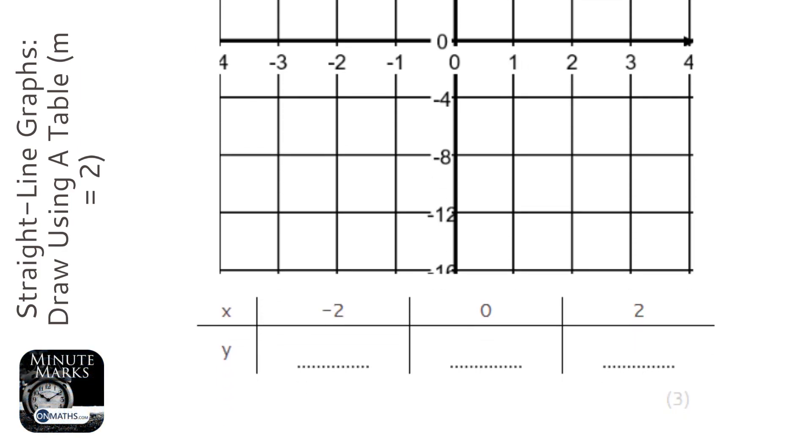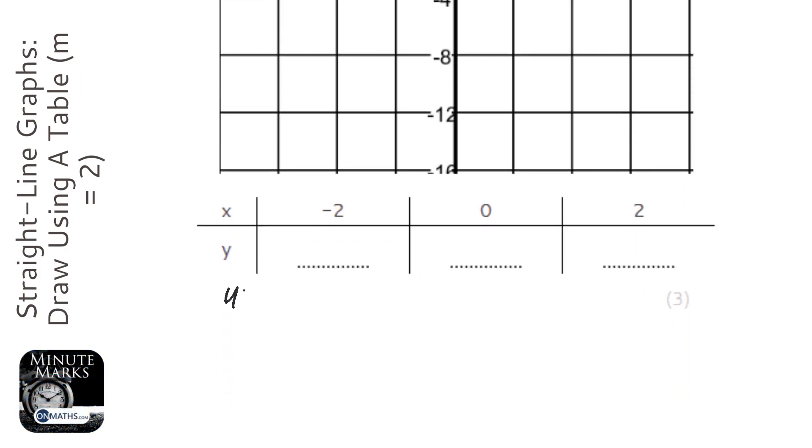So we've got y = 2x - 6. I've picked the points -2, 0, and 2.